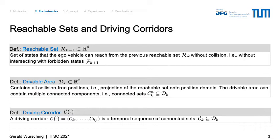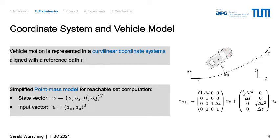A driving corridor is defined as a temporal sequence of connected sets over a certain time interval. In our work, we represent the vehicle motion in a curvilinear coordinate frame aligned with a given reference path, which can be determined by a route planner. In the curvilinear frame, the position and velocities of the vehicle are described by the coordinates S and D — the path length along the reference path S, and the lateral deviation D. For the reachability analysis, we simplify the vehicle dynamics using a point-mass model, with a state vector of longitudinal and lateral positions and velocities, and an input vector of longitudinal and lateral accelerations, all in the curvilinear frame.